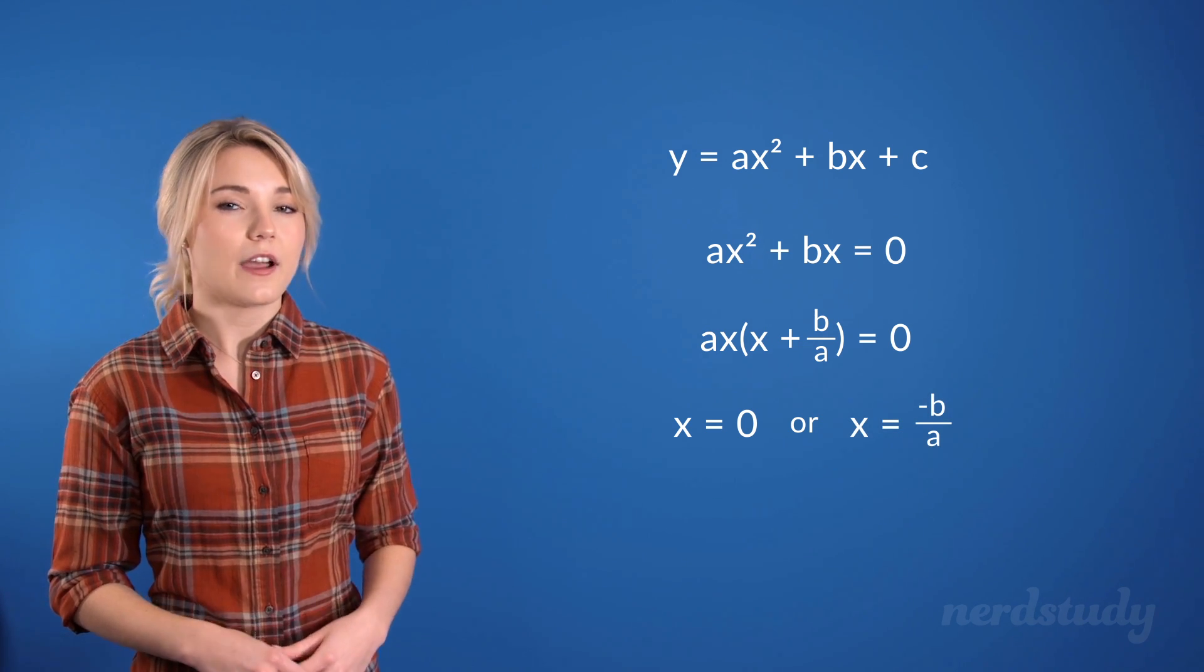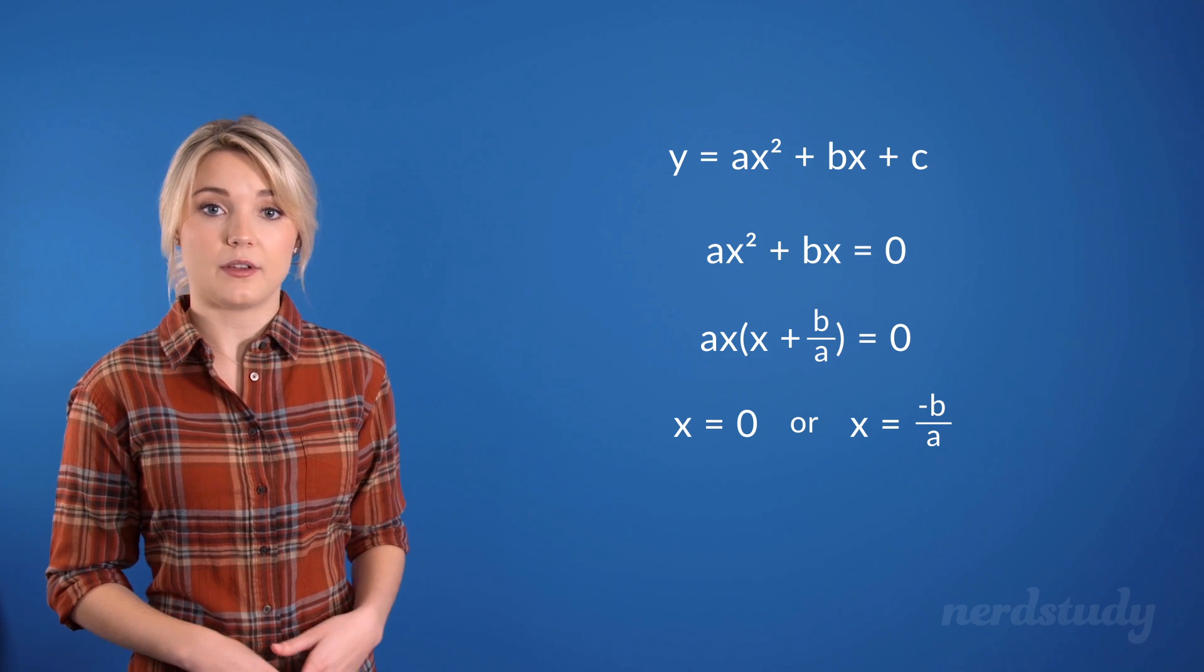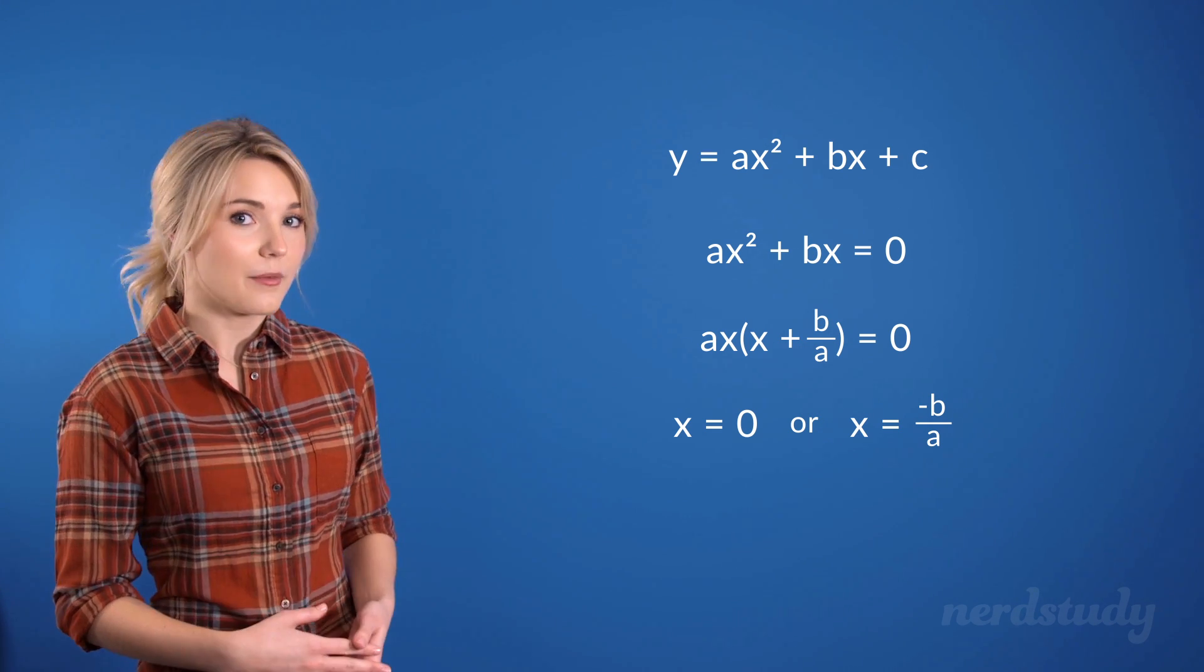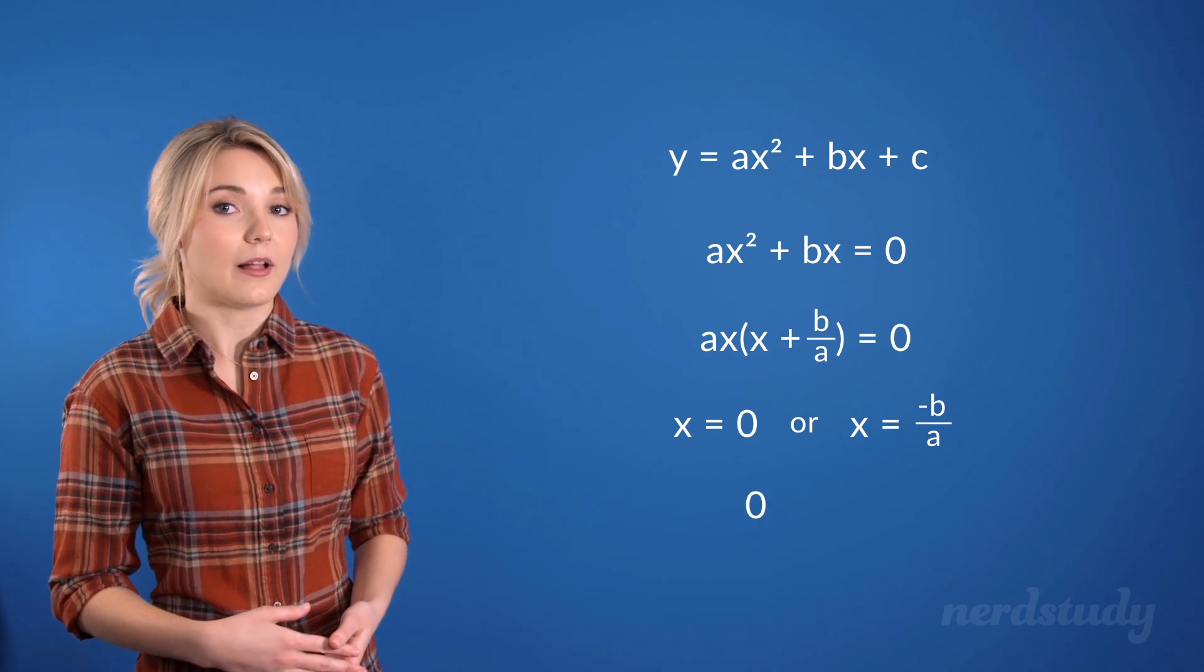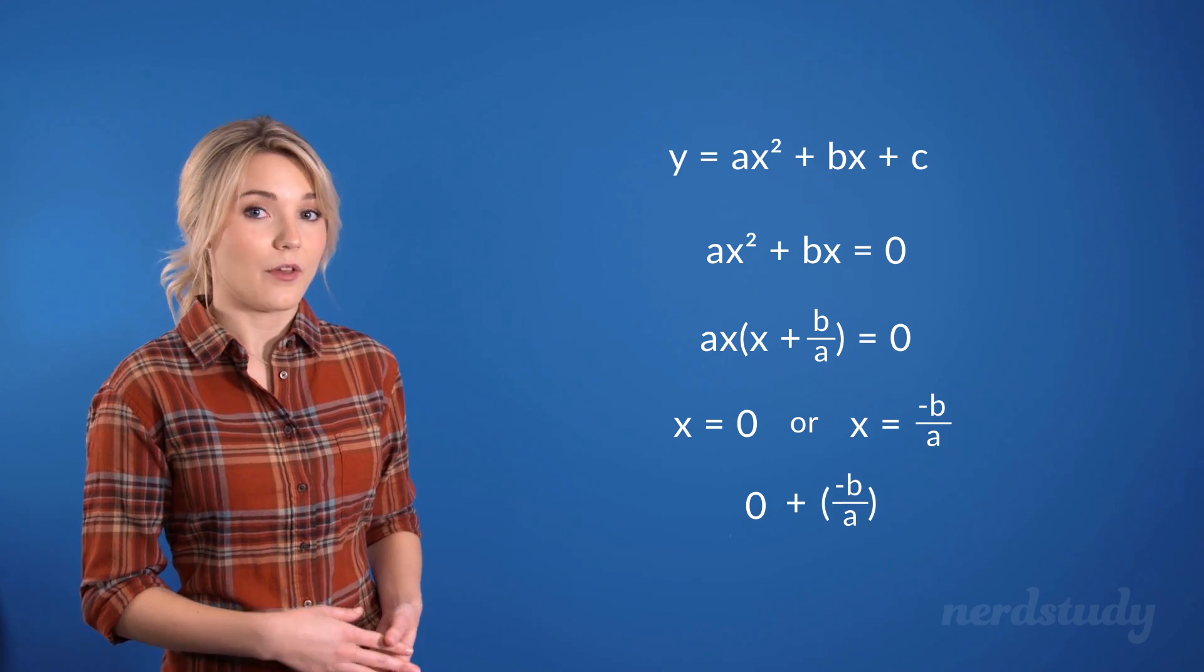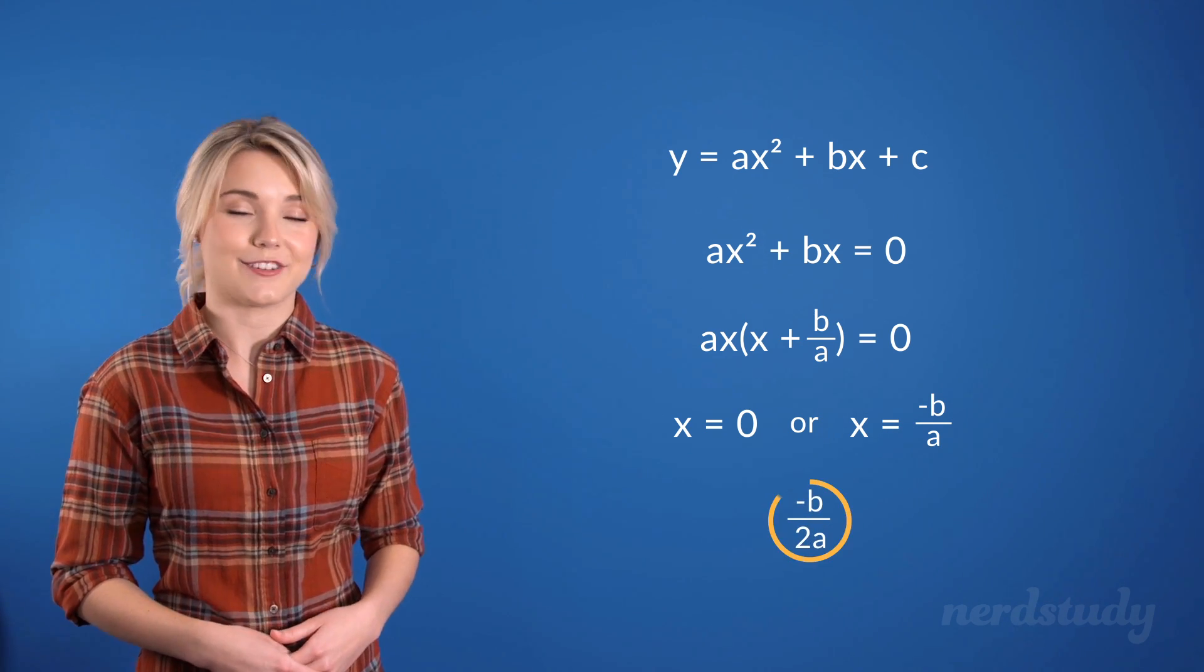Now if we want to find the vertex's x value, all we have to do again is average out the sum of these two by doing 0 plus minus b over a, all divided by 2, and we get minus b over 2a. Aha!